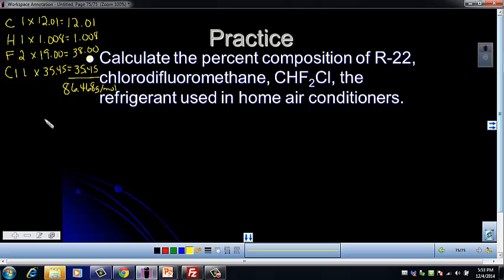So now in order to do our percent carbon, we're just going to take our mass of carbon from up here. And we're going to divide by our mass of our compound. So 86.468 grams of CHF2Cl. And then we're going to take that answer and we're going to multiply it by 100. And what I got, remember we've got four sig figs in our problem. So that's going to give us 13.89%.